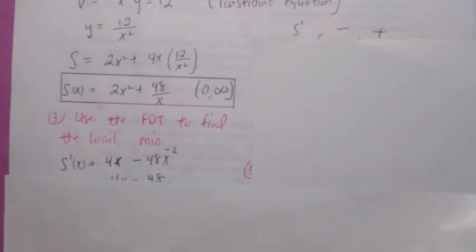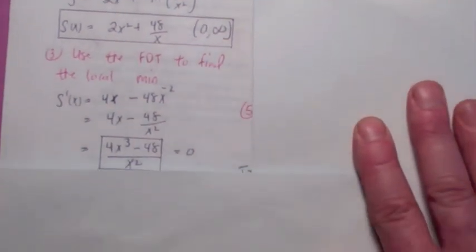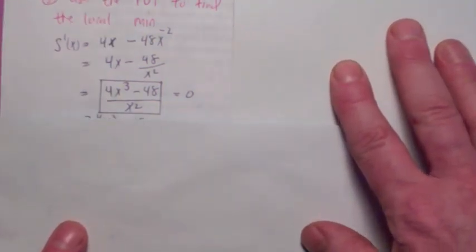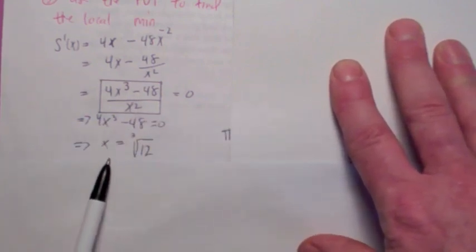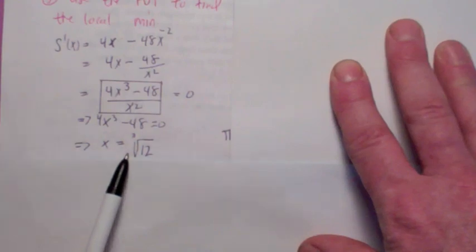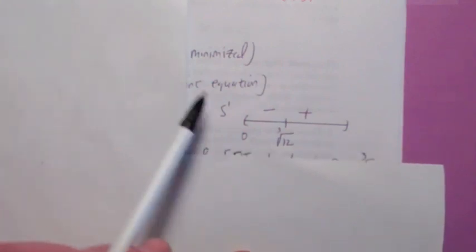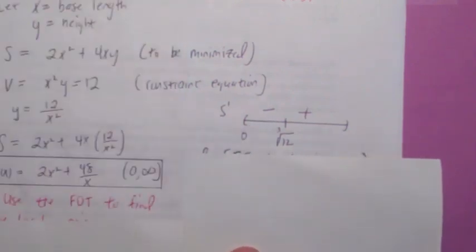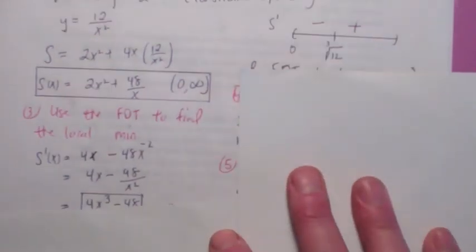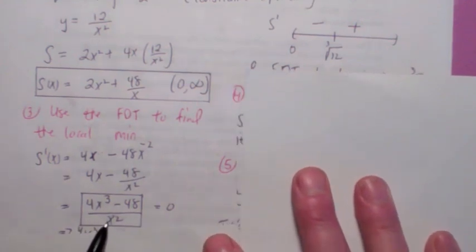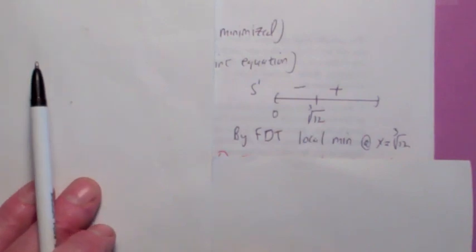To find the local minimum, we take the derivative, set it equal to 0. To set it equal to 0, you might want to get the common denominator, which is x². And it's going to be 0 precisely when the numerator is 0. You set 4x³ - 48 = 0, divide by 4, take the cube root, x is the cube root of 12. So then we use a sign chart on this. S prime is going to be negative between 0 and ∛12, and positive after. So you show you have a local min. By the first derivative test, you have a local min at x = ∛12.